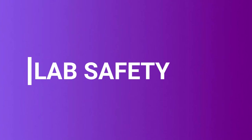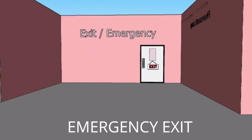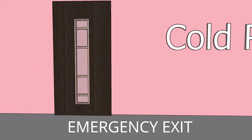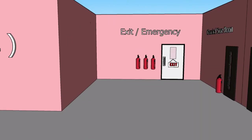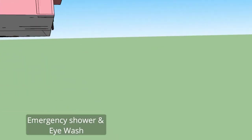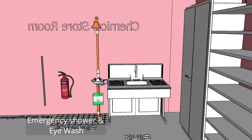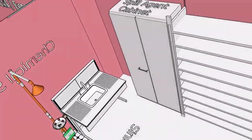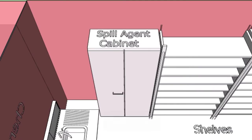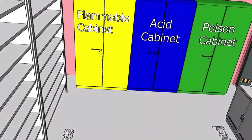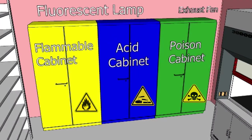The hematology laboratory is considered a biosafety level 2 (BSL-2) laboratory. Several safety measures are in place: the laboratory has two emergency exits at the back, and it is equipped with an emergency shower and eye wash station to minimize the effect of accidental chemical exposure. Spill agents are provided to treat small chemical spills. For large or toxic chemical spills, all occupants should be evacuated immediately. Hazardous chemicals are segregated into different cabinets, each labeled with its respective hazard level.